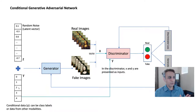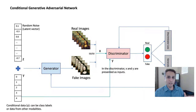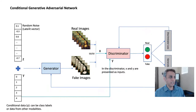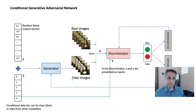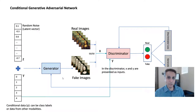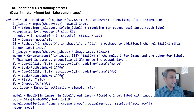To combine a latent vector and conditional data of different dimensions, we use an embedding layer to convert the integer-encoded label values into vectors. At a high level, the combined input to the generator is the latent vector plus the conditional data. That conditional data also goes into the discriminator alongside real and fake images. Everything else remains the same.